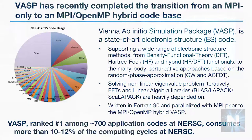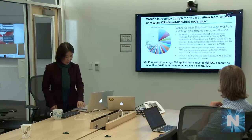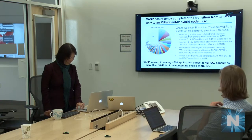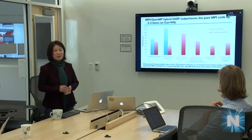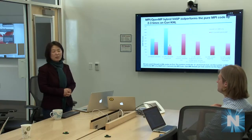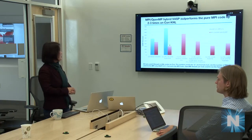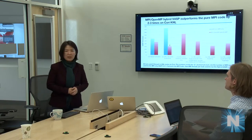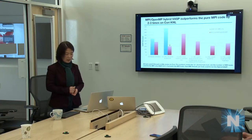The VASP code is a materials science code and it uses a lot of machine time at NERSC. Looking at about 700 applications at NERSC, it's number one — the blue pie over there. So it's very critical to get this code running well on KNL. Fortunately the optimization work has been done. NERSC participated by exploring MCDRAM's performance impact and helped the developers through dungeon sessions with Intel back in 2015. We also helped with beta testing and exploring execution space parameters.